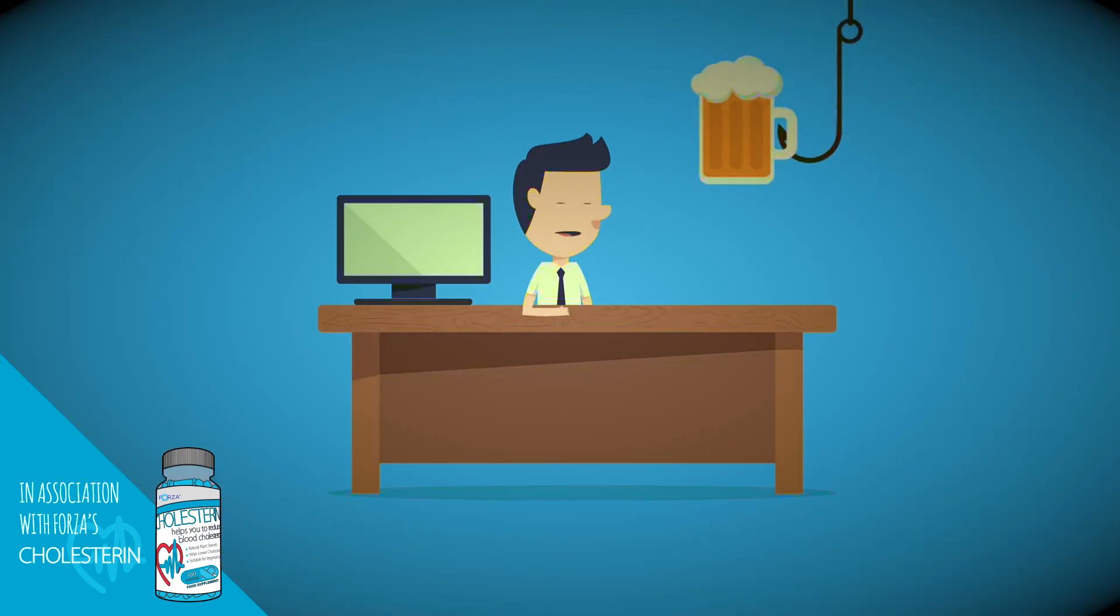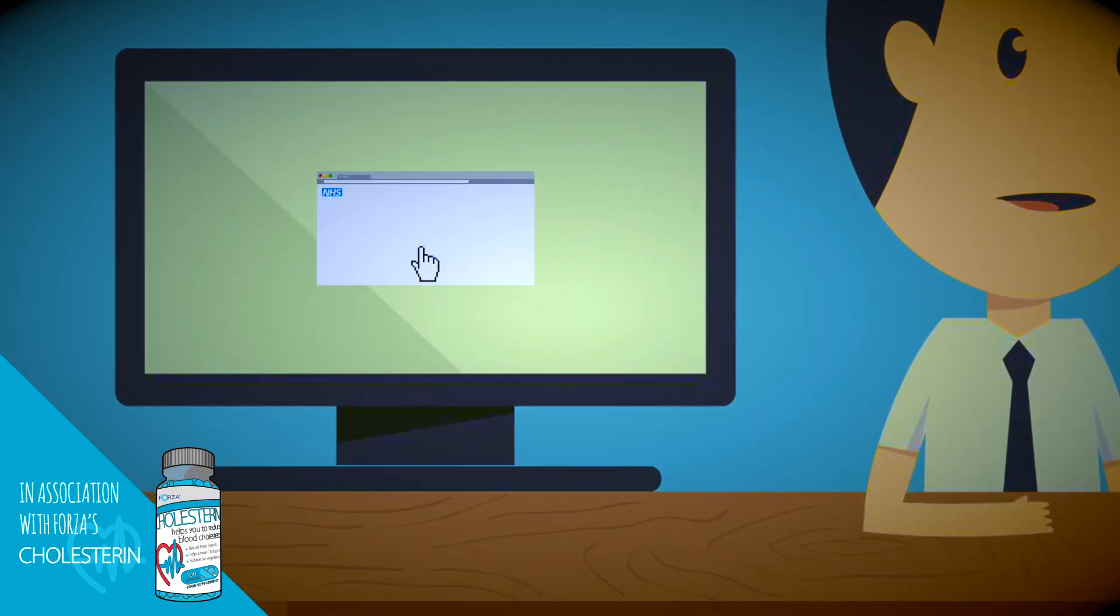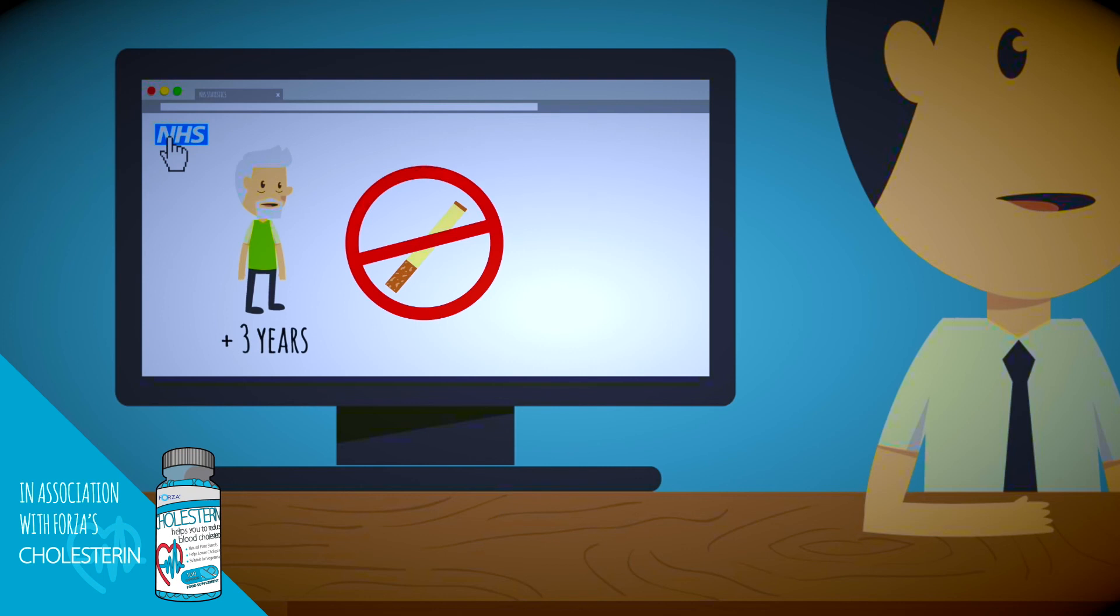Other lifestyle changes that can make a big difference to all aspects of heart health include reducing your alcohol consumption and giving up smoking. According to NHS statistics, people who quit smoking before the age of 60 can add 3 years to their life, while those who give up before 30 can prolong their life by an extra 10 years.